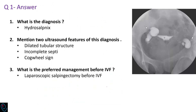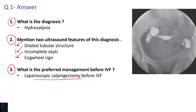Answer to question 1: the diagnosis is hydrosalpinx. Two ultrasound features of this diagnosis include dilated tubular structure, incomplete septae, and cogwheel sign. The preferred treatment before IVF is laparoscopic salpingectomy.